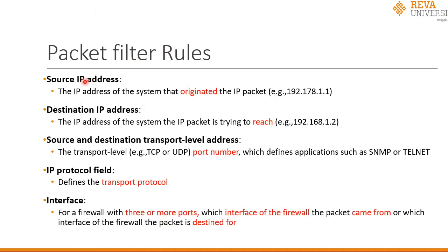The rules used in a packet filter are: source IP address, destination IP address, source and destination transport level address, IP protocol field, and interfaces. In source IP address filtering, the IP address of the system that originated the packet is examined. In destination IP address filtering, the firewall examines the IP address of the system being reached from the outside world. Source and destination transport level addresses refer to TCP or UDP port numbers.